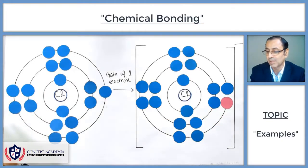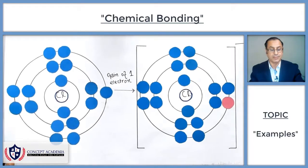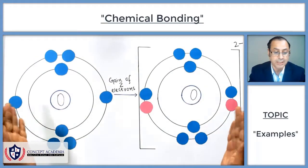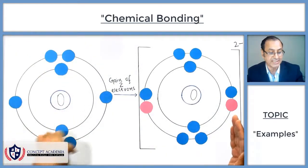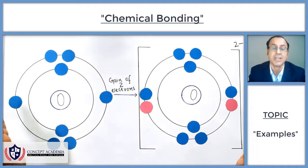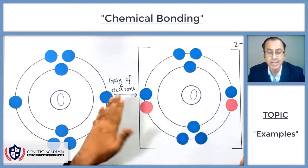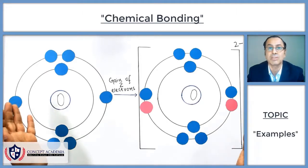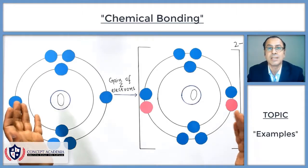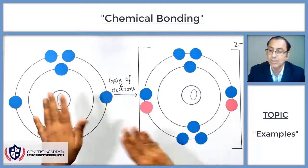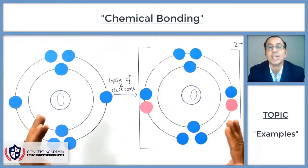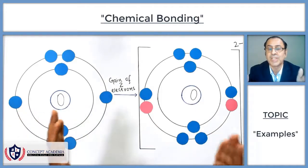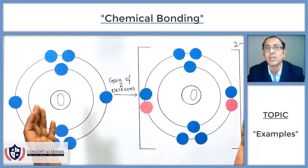Oxygen is also a non-metal; it belongs to group 6 and therefore has six electrons in its last shell, since the group number tells us the number of electrons in the last shell. It requires two more electrons to get eight electrons and complete its octet, achieving the noble gas electronic configuration. With the gain of two electrons it gets a negative two charge.